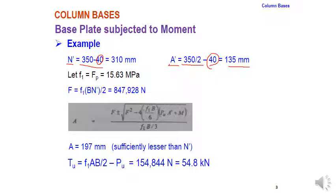For the first trial, f1 = fp = 15.63 MPa. Capital F = f1 × B × N' / 2 = 847,928 N. This F is then used to calculate capital 'a'.